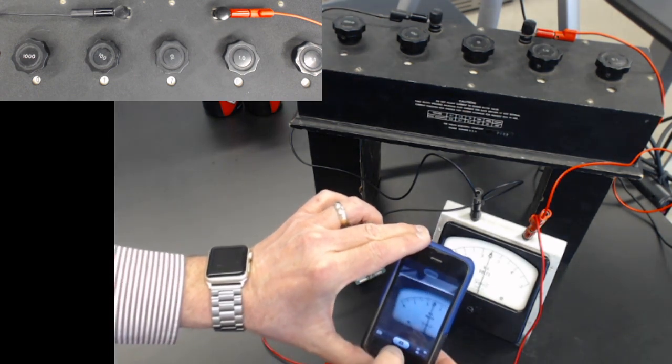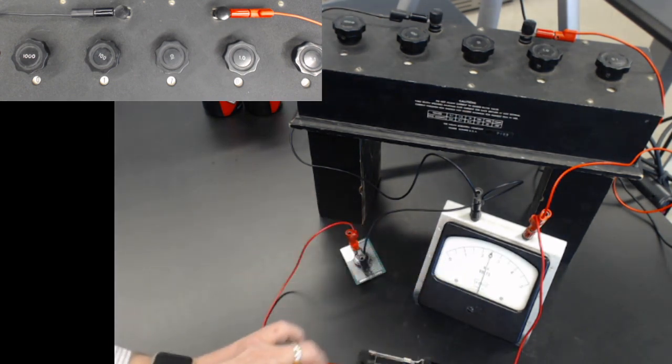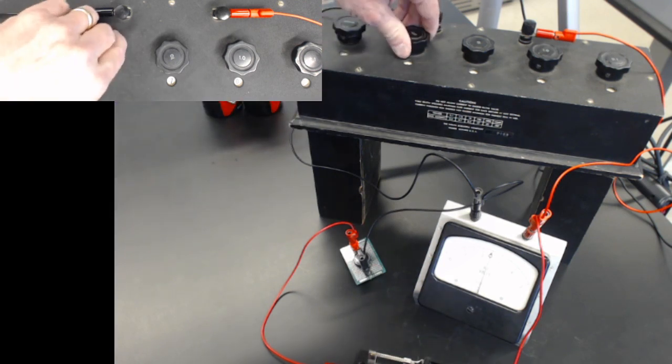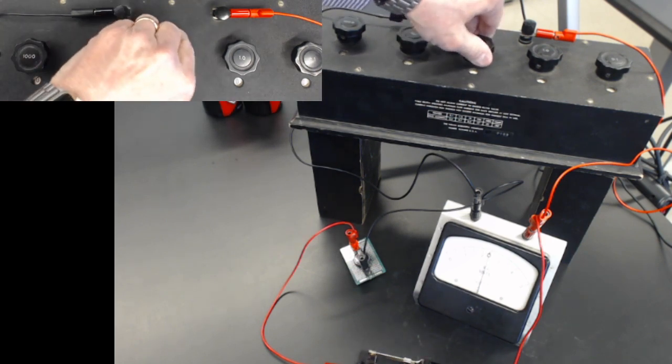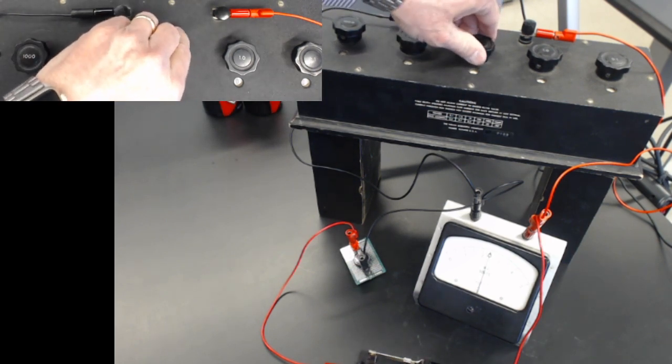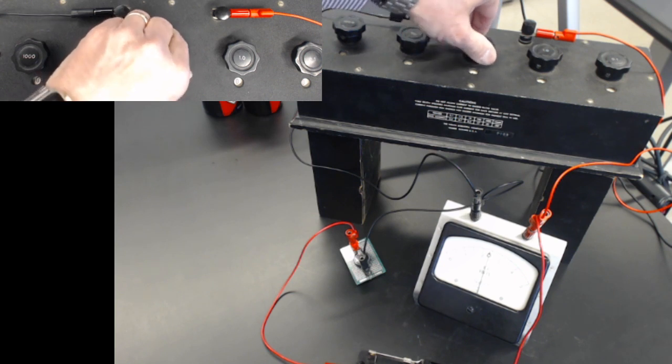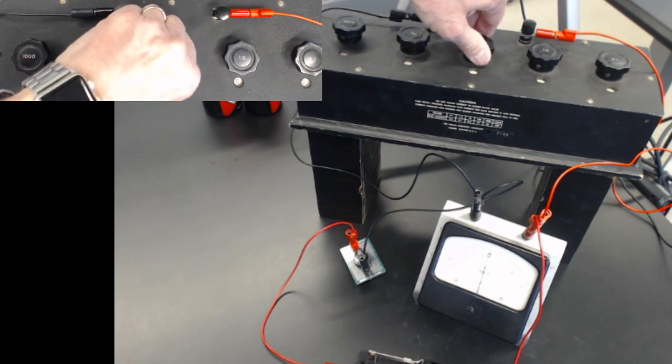This camera. Don't worry about parallax. 70 ohms, 60, 50, 40. Do one more. 50, too much. 40, too little.